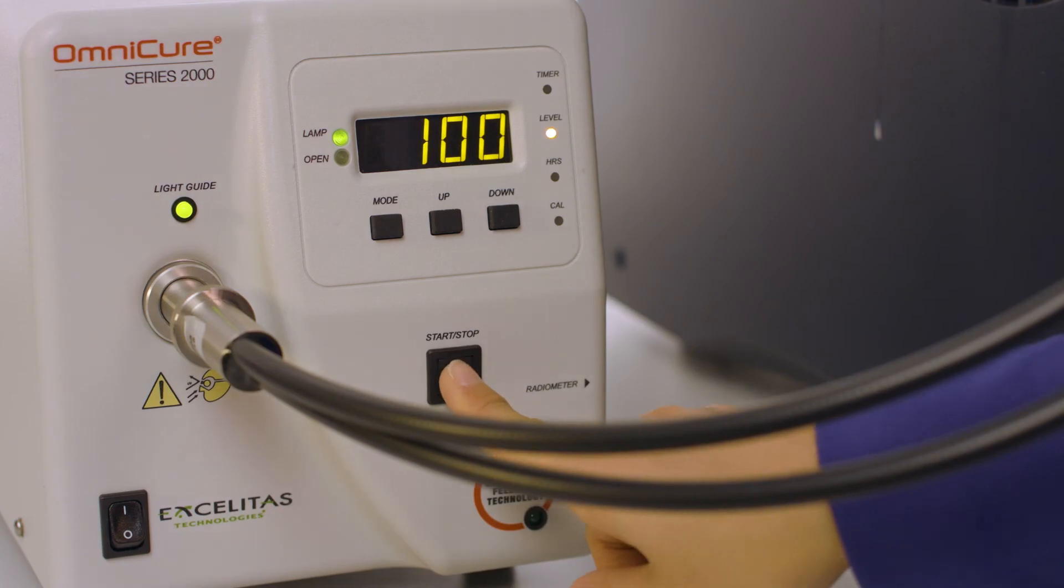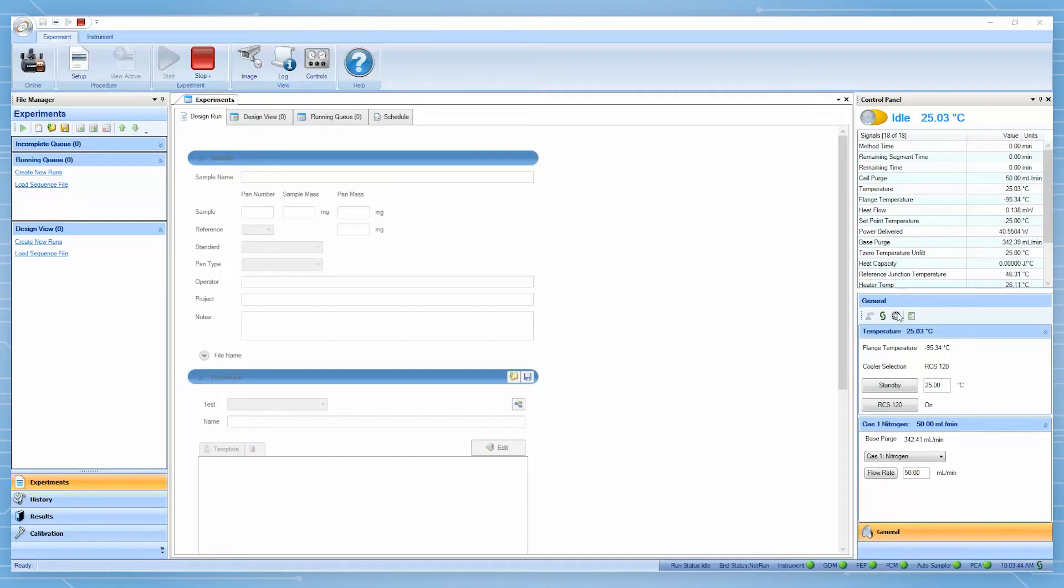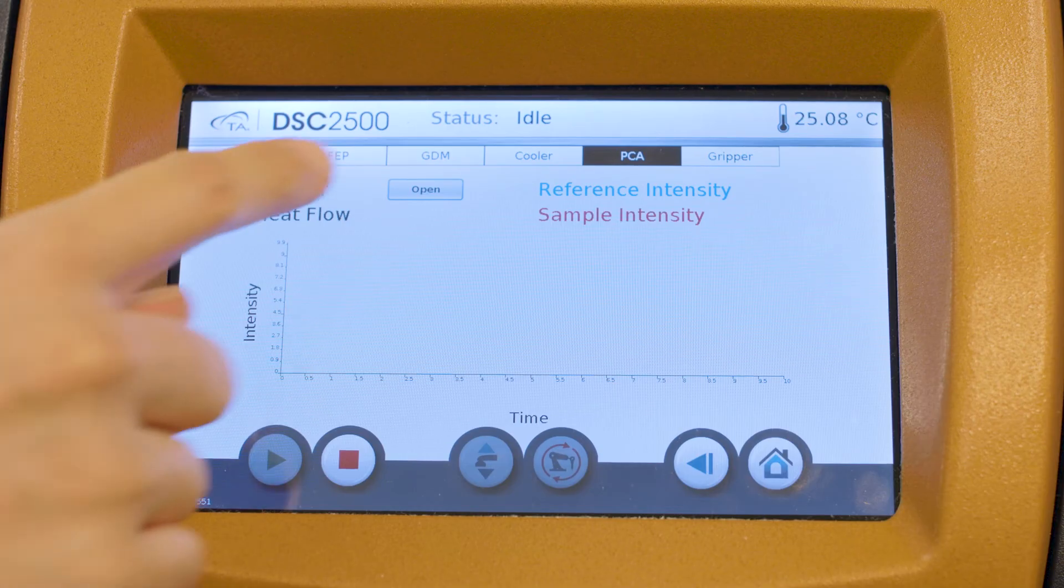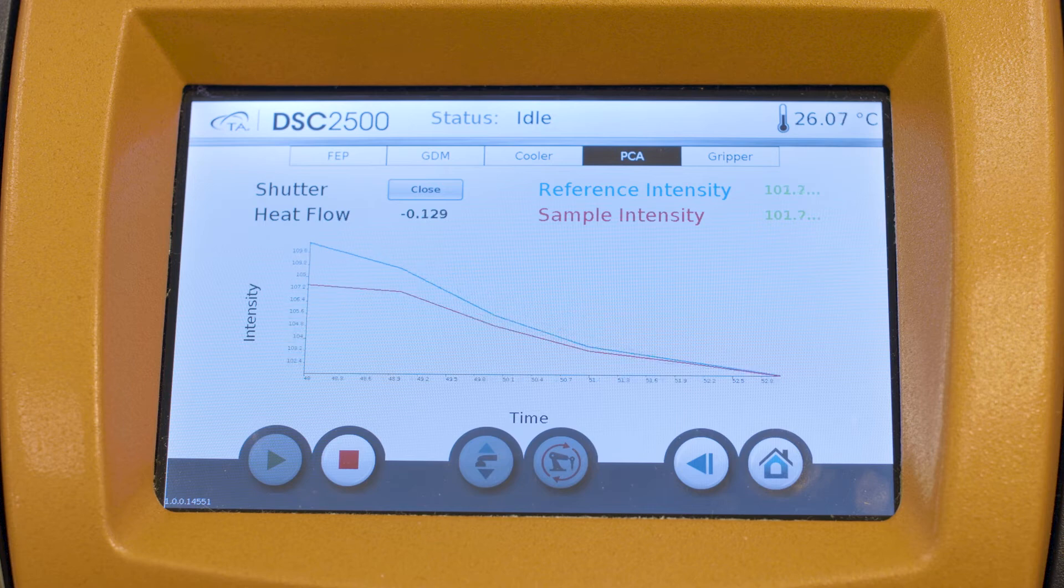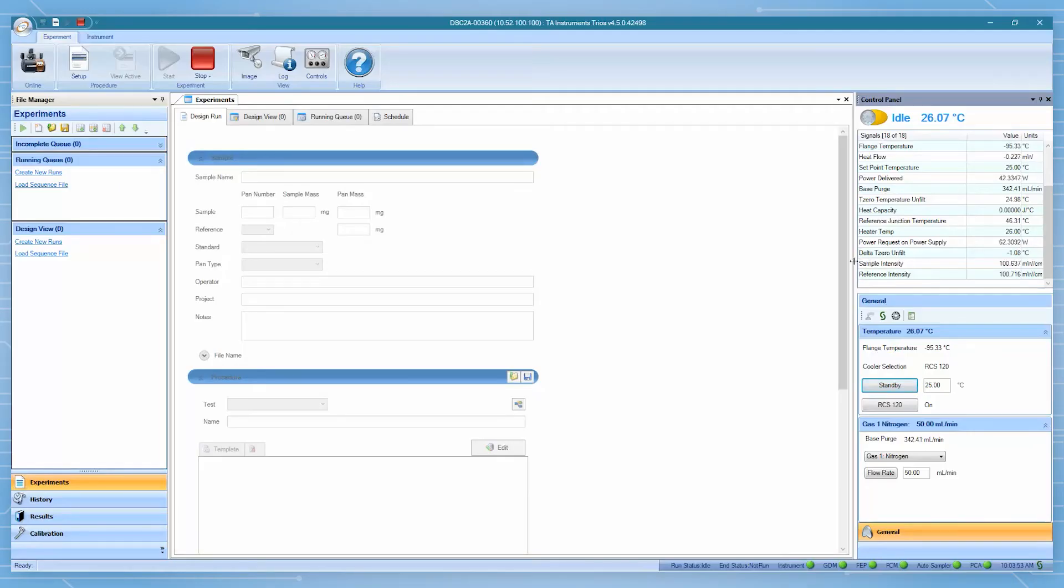Open the shutter either from the light source, the software, or the touch screen. Perform intensity adjustment and balancing process while monitoring the signal displayed on the touch screen or on the TRIO controller.